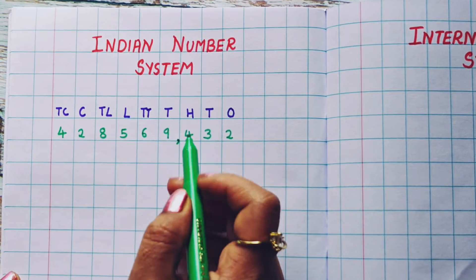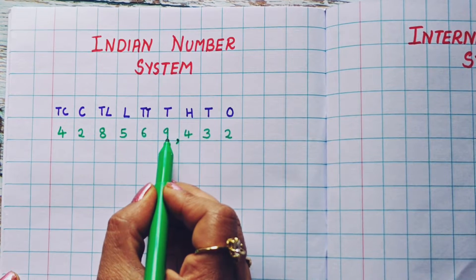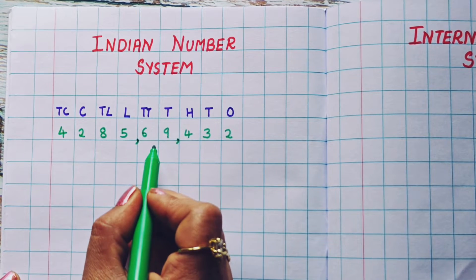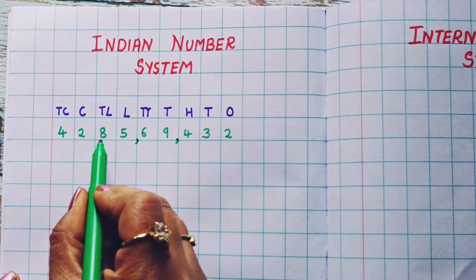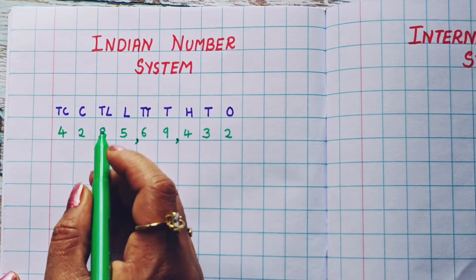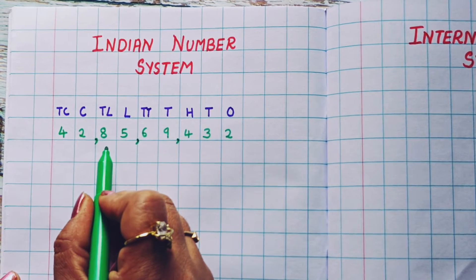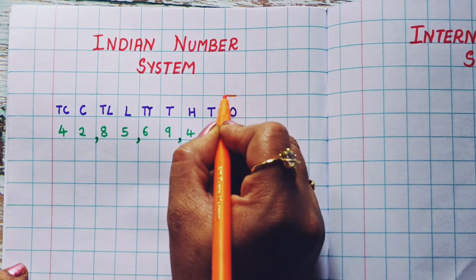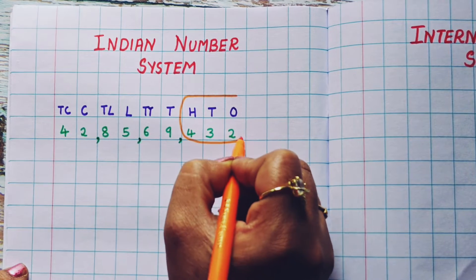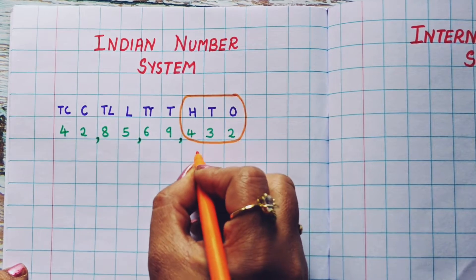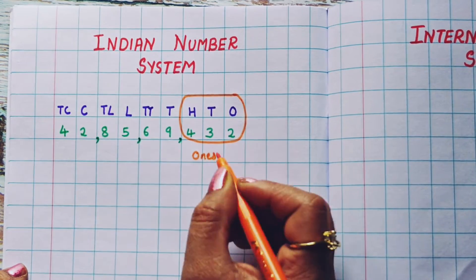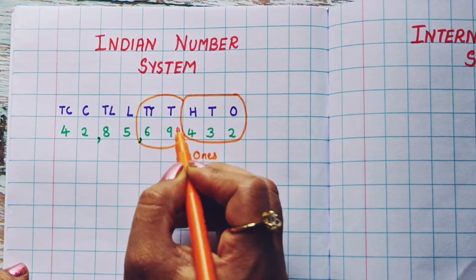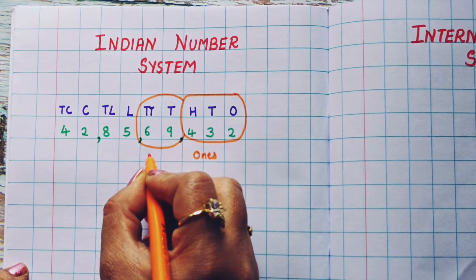This whole thing is one group. Then after thousands and ten thousands place — that is after two places — I am going to give the next comma. And again after two places, that is lakh and ten lakh, here I am going to give another comma. So now this whole set becomes the ones group, and this second group between these two commas becomes the thousands group.